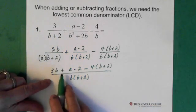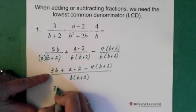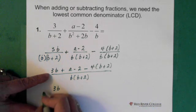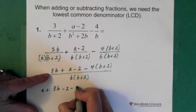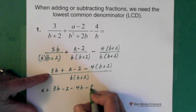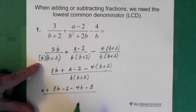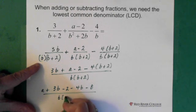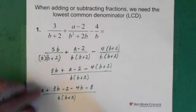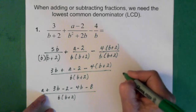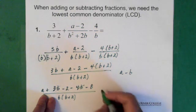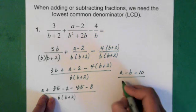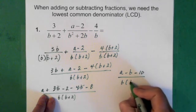Alright. So now what we can do is just add up some of this stuff or sort it out a little bit more. So we have 3b. Let's put the a in front. So a + 3b - 2 - 4b - 8. And the denominator remains b(b + 2). Okay. Now we'll just add this up. We have a minus b, so these two are gone.